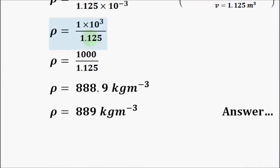When solved, the answer is 1000 divided by 1.125. When 1000 is divided by 1.125, the answer is 888.9 kg/m³. When rounded off, the answer is 889 kg/m³. This is the final answer.